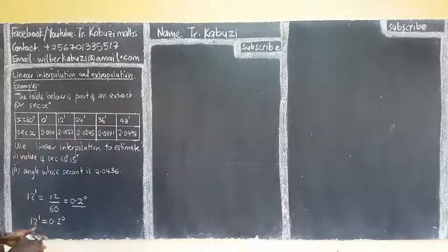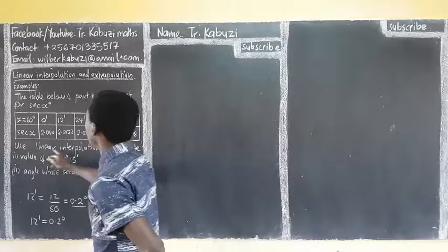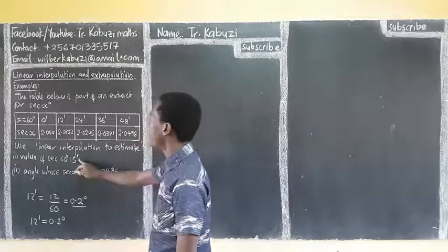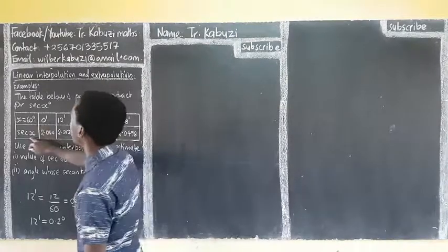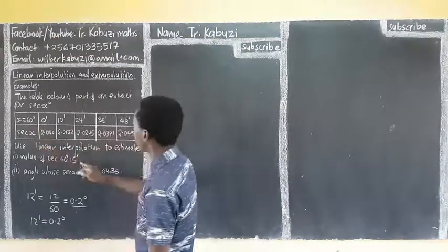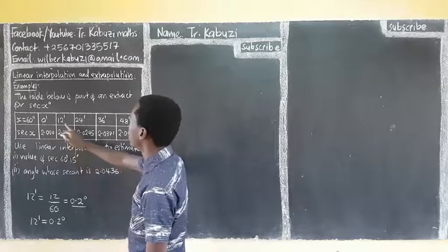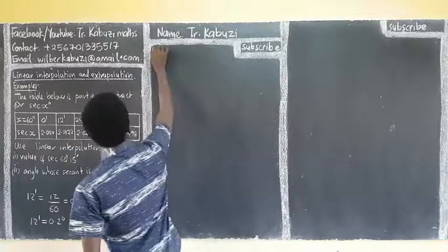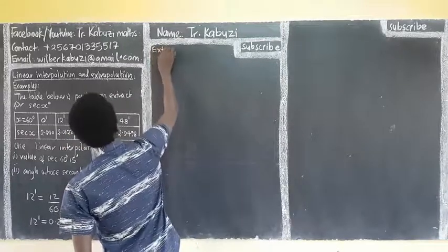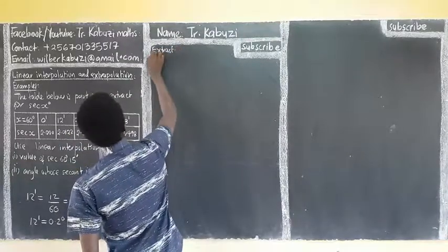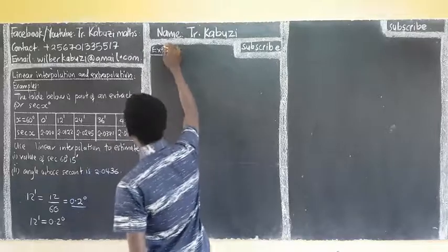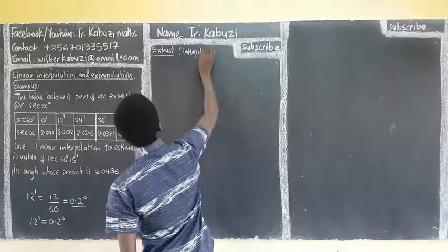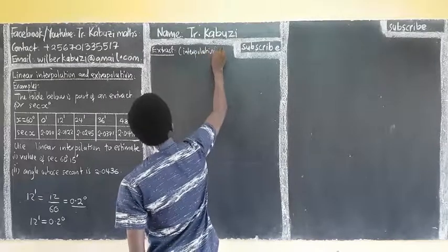Our question is: use linear interpolation to estimate the value at 67 degrees 12 minutes. They want us to get the value at 15 minutes, which is between the given values, so we're going to use interpolation. Let's set up our interpolation.